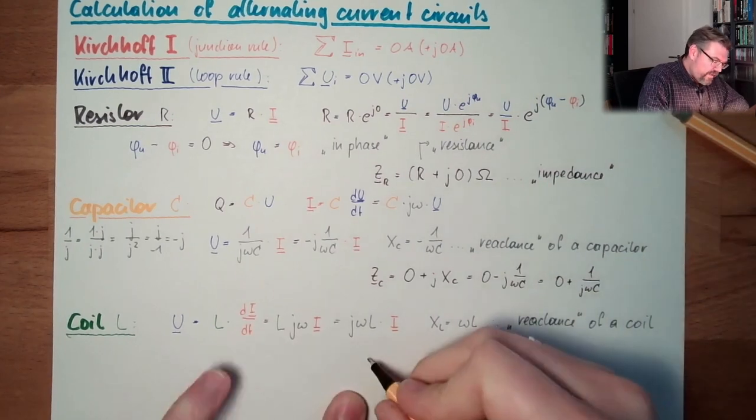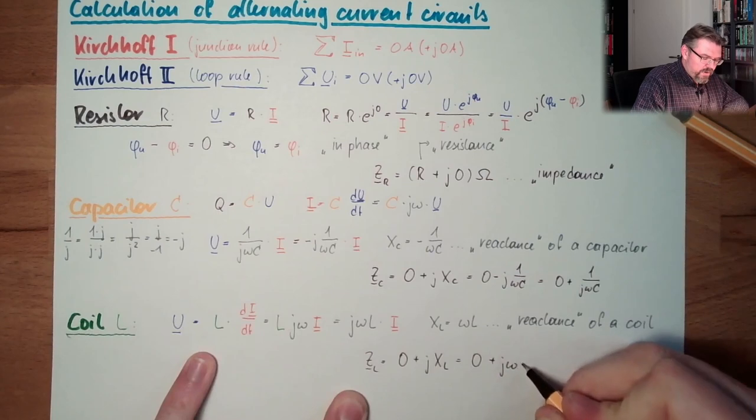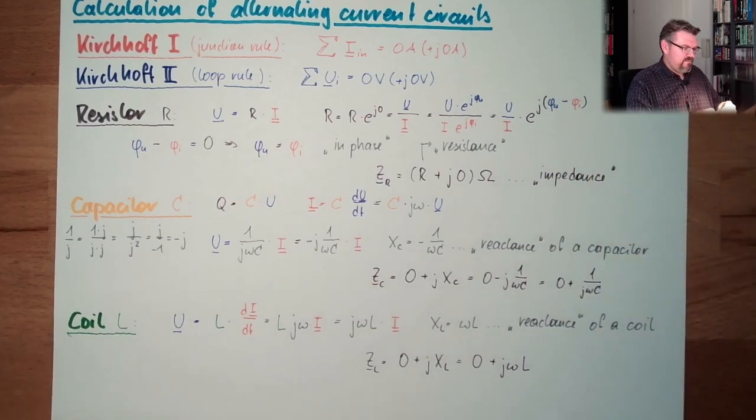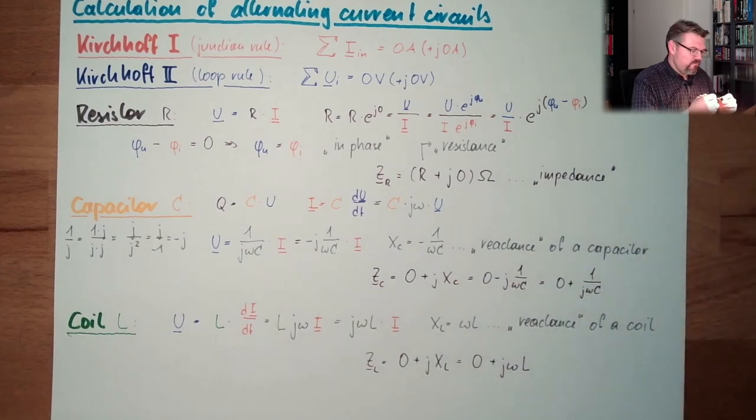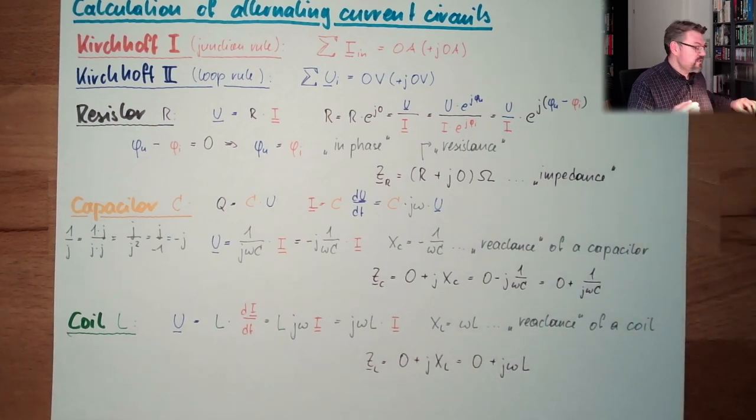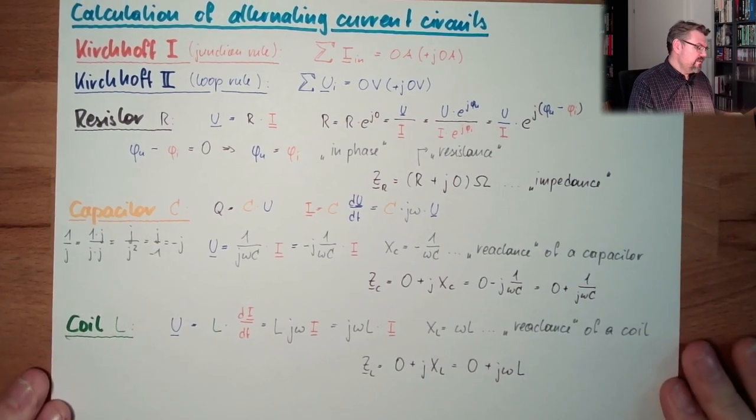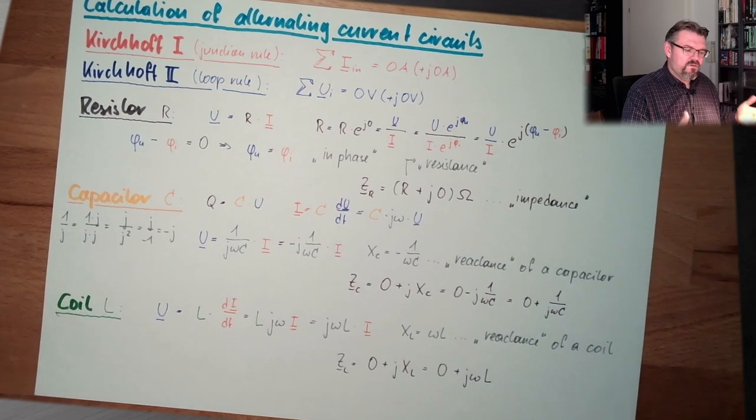So my impedance of the coil, ZL, is 0 plus J XL. And this is 0 plus J omega L. So actually, in an AC circuit, everything, a resistor, a capacitor, a coil, is acting like a resistance. But this resistance is not called resistance because a resistance would only be the real part. So we call it impedance. And every element has their own impedance, which is a complex resistance, which consists of the real part, resistance, and the imaginary part, the reactance. And if the reactance is positive, then it's called inductive reactance because it's coming from a coil. And if the reactance is negative, it's called capacitive reactance because it's coming from a capacitor.